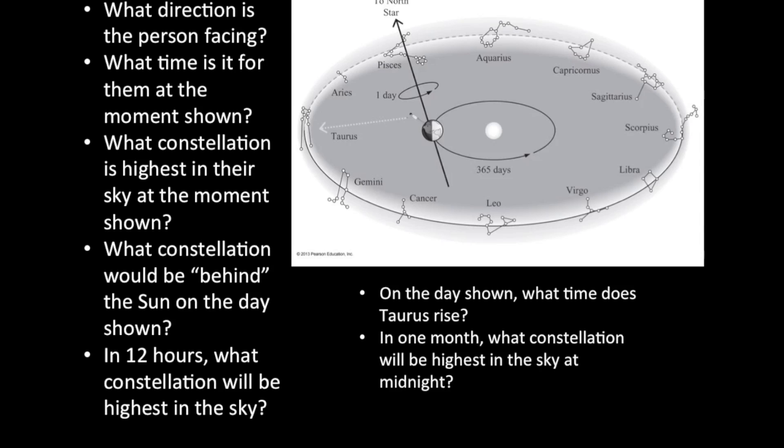So in one month, the Earth will have moved a 12th of the way around in its orbit, which means the nighttime side of the Earth will be pointing out towards Gemini in space. And so if you're on the Earth, and you face the southern horizon at midnight, the constellation that will be highest in your sky then will not be Taurus, it will be Gemini.